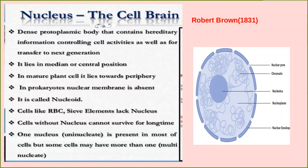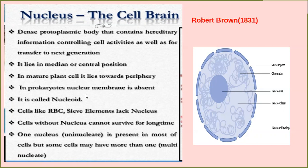Now we discuss the nucleus. The nucleus is considered the brain of the cell — the controlling center containing hereditary information in the form of DNA. It typically lies in the median or central position of a cell, but in plant cells it lies towards the periphery. In prokaryotes, there is no nuclear membrane; the poorly defined nucleus is called a nucleoid.